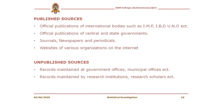There are two types of sources for secondary data: published sources and unpublished sources. Published sources include official publications of international bodies such as IMF, IBD, UNO, etc.; official publications of central and state governments; journals, newspapers, and periodicals; and websites of various organizations on the internet. Unpublished sources include records maintained at government offices, municipal offices, research institutions, and research scholars.